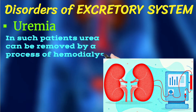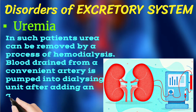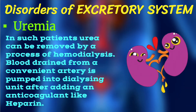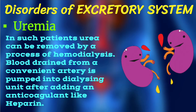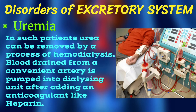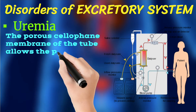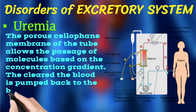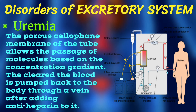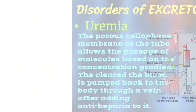In patients with uremia, urea can be removed by a process called hemodialysis. Blood drained from a convenient artery is pumped into a dialyzing unit after adding an anti-coagulant like heparin. The porous cellophane membrane of the tube allows the passage of molecules based on the concentration gradient. The cleared blood is then transferred back into the body through a vein after adding anti-heparin. This is how uremia patients are treated.